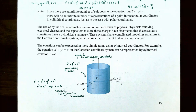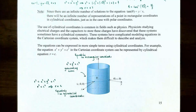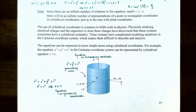One important note: there are an infinite number of solutions to tangent theta equals y over x, because the tangent function is periodic with a period of pi. Every pi radians, the tangent function will have the same ratio y over x. So there are an infinite number of representations of a point in rectangular coordinates when using cylindrical coordinates — just as in the case of polar coordinates, which also had infinite representations.